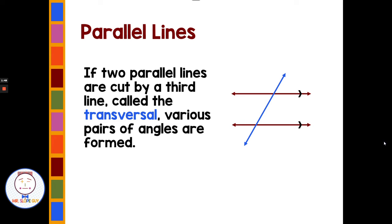If two parallel lines are cut by a third line called a transversal, various pairs of angles are formed. We have two parallel lines with notation showing they're parallel, and the blue line is the transversal cutting through them. It makes all kinds of angles, and we're going to talk about the names and properties of these specific angles.